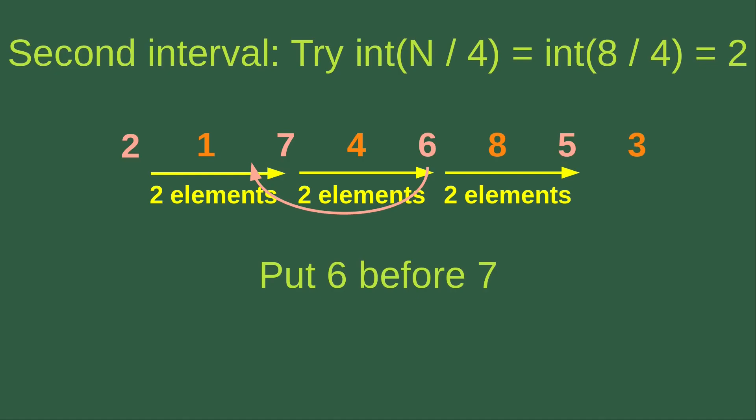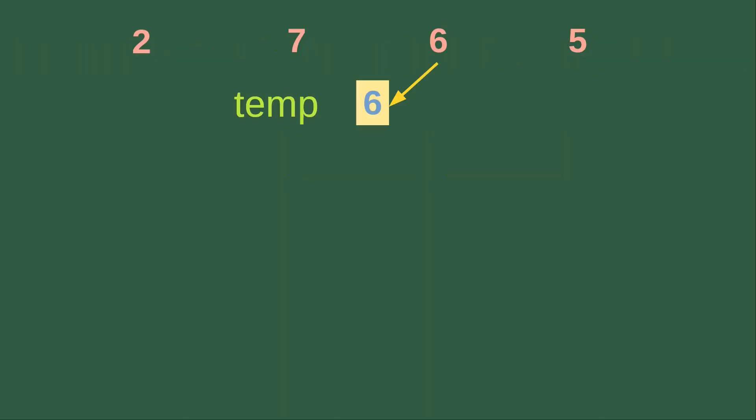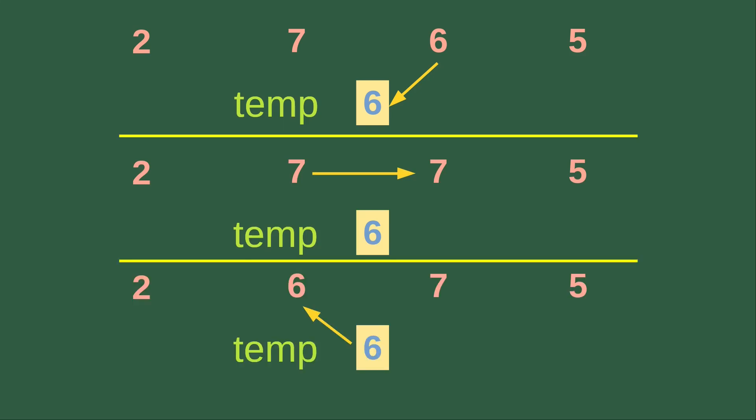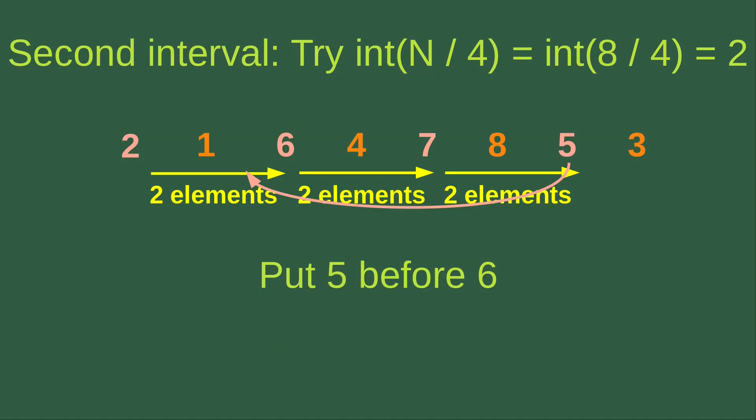The first idea is that we have to put 6 before 7. We use the swapping technique: first we copy 6 to the temporary variable, then we copy the left-hand side element to the right-hand side, and then we put the temporary element to the left-hand side so that the swapping is complete. Now we have already swapped 6 and 7.